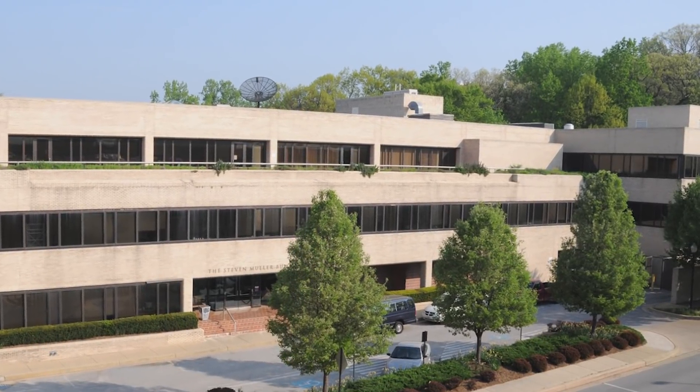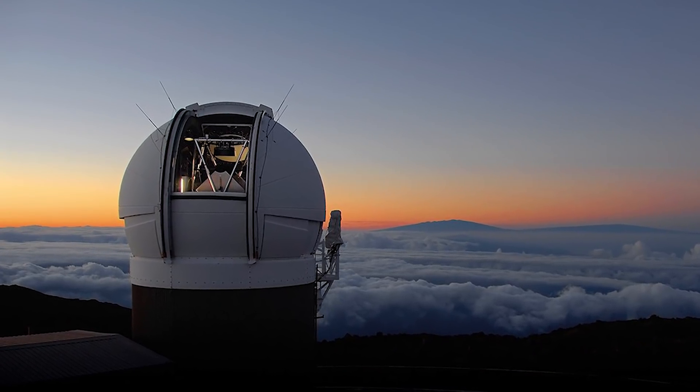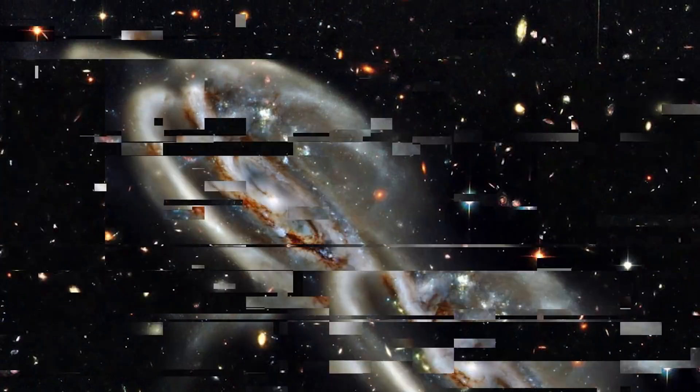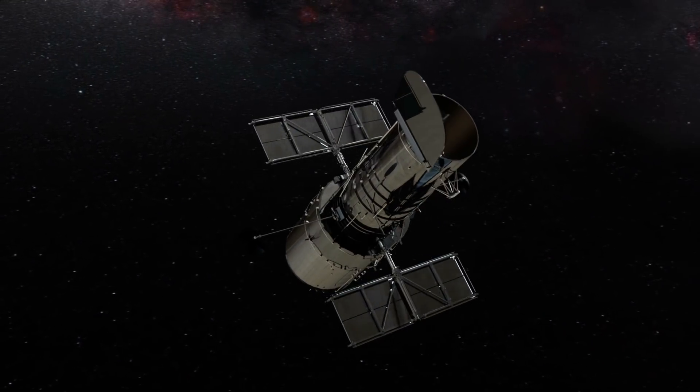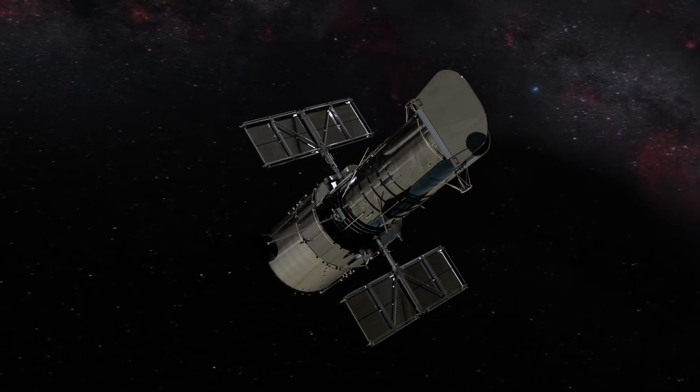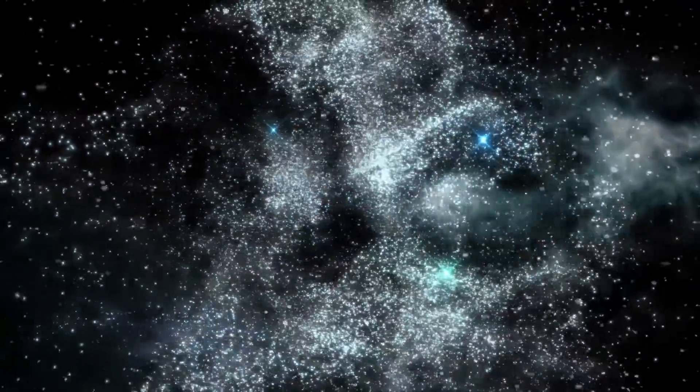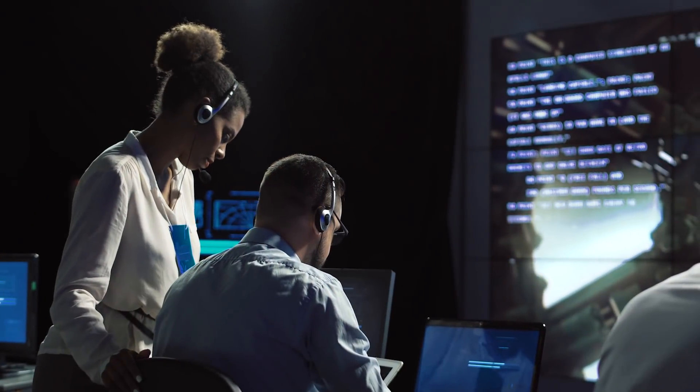But in 2012, astronomers based at the Space Telescope Science Institute redid the prediction calculations, using new data that had been collected by the Hubble Space Telescope over the course of the prior ten years. This new data allowed them to determine Andromeda's sideways motion. With that vital piece of information,